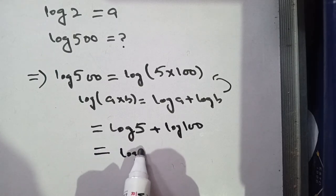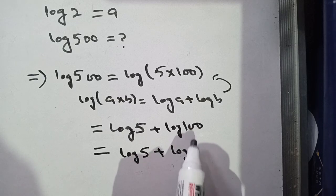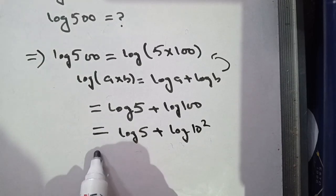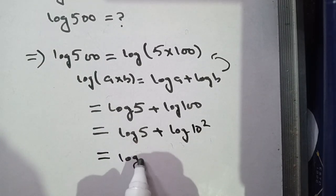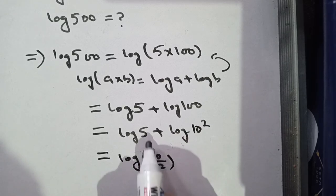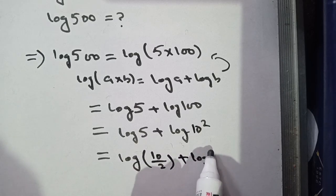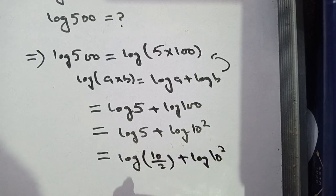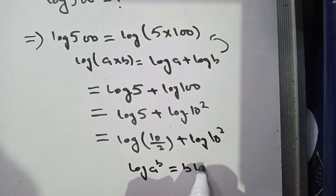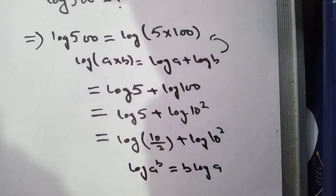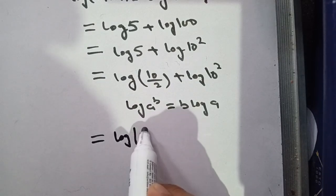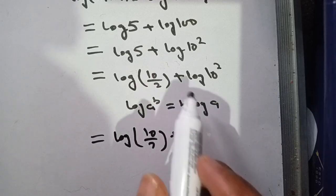Now, log of 100 can be written as log of 10 power 2. Also, log of 5 can be written as log of 10 divided by 2. We know that log of a power b is equal to b times log of a, so log of 10 power 2 becomes 2 times log of 10.